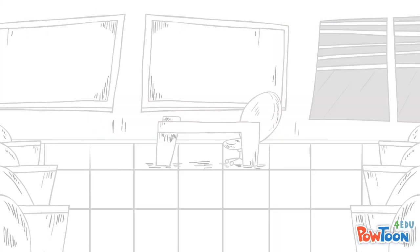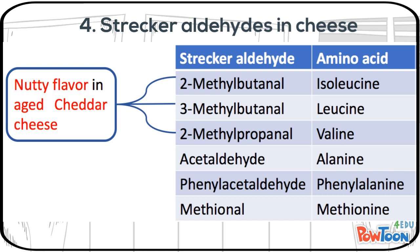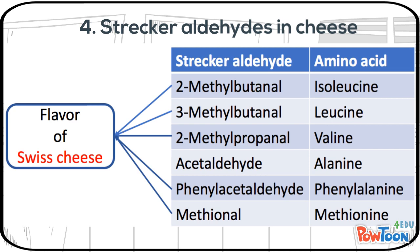Cheese is another dairy product that contains Strecker aldehydes. 2-methylbutanal, 3-methylbutanal, 2-methylpropanal, acetaldehyde, phenylacetaldehyde, and methionol are common Strecker aldehydes found in cheese varieties. The first Strecker aldehydes can contribute to the nutty flavor in aged cheddar cheese. In parmesan cheese, three of them combined with acetaldehyde and phenylacetaldehyde contribute to a sharp, penetrating, and fruity flavor during cheese ripening. In Swiss cheese, some Strecker aldehydes were also detected, including 2-methylbutanal, 3-methylbutanal, 2-methylpropanal, phenylacetaldehyde, and methionol.